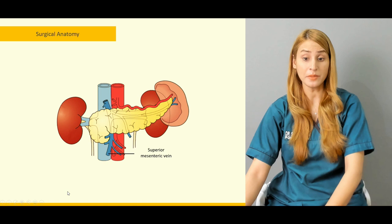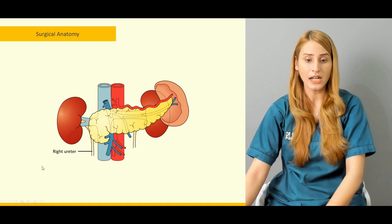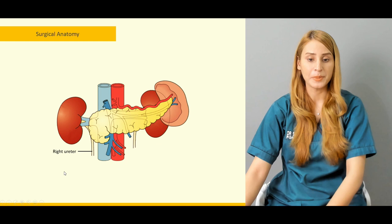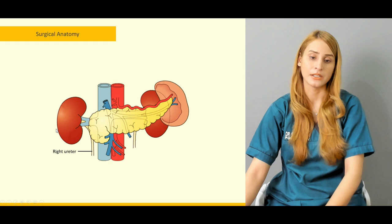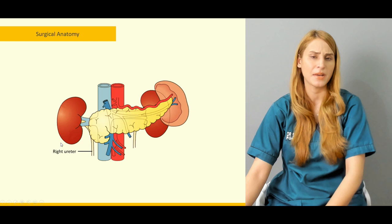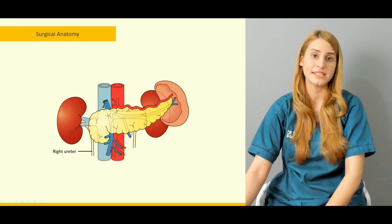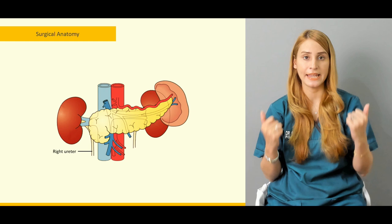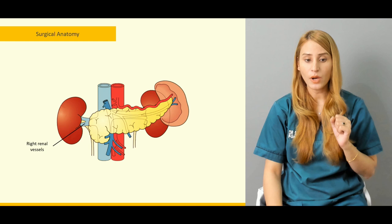The superior mesenteric vein is located in front of the uncinate process. The portal vein and the inferior vena cava are located behind the head and neck of the pancreas. The aorta is just behind the body of the pancreas. The splenic vein and superior mesenteric vein join together behind the neck of the pancreas to form the portal vein.